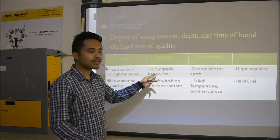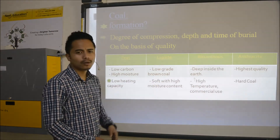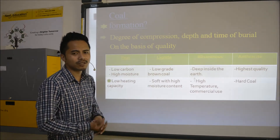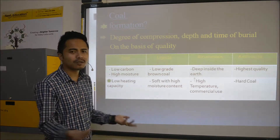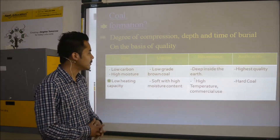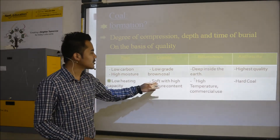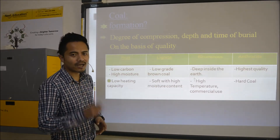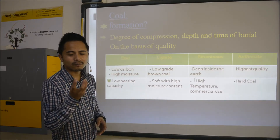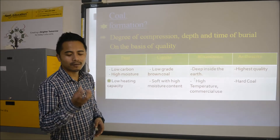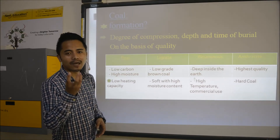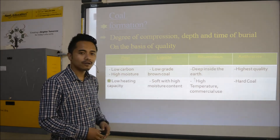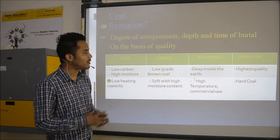Another type is lignite — it is low grade brown coal. Coal is usually black, and when it is brown, the quality is lower. Lignite is soft with high moisture content. Usually coals are very hard, and how much heat coal produces depends on hardness too. Lignite coal is very soft and contains high moisture — it is very wet.